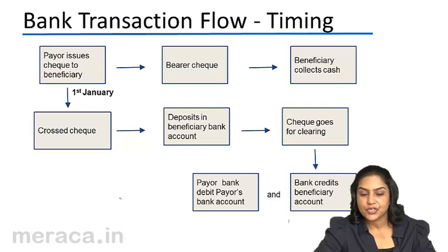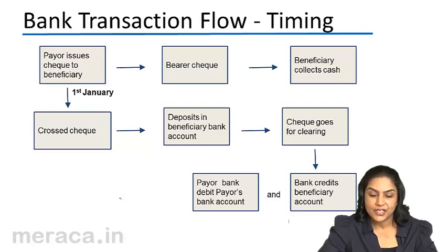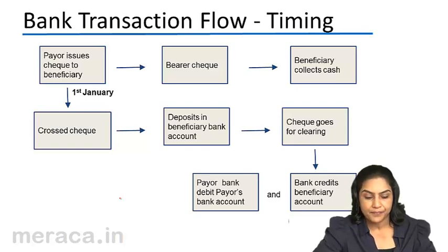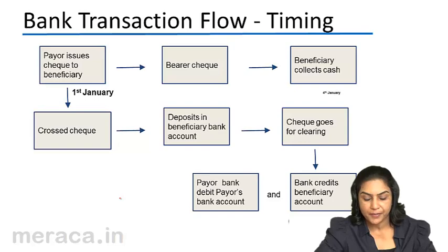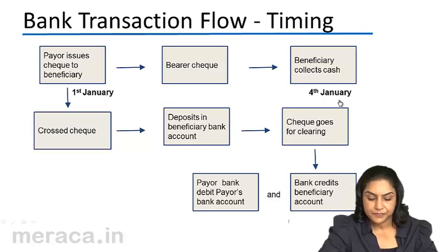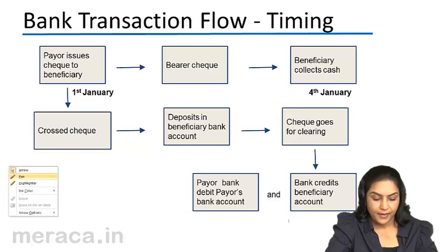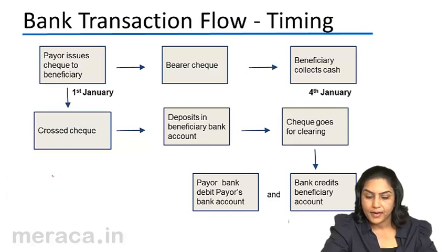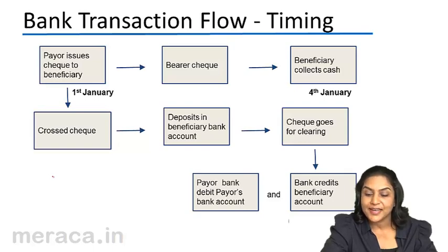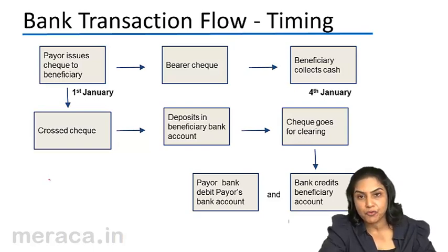The bank transaction flow — let us understand the timing. The payer issues the check to the beneficiary on 1st January. Let us first take the case of a bearer check. In case of a bearer check, let us assume the beneficiary has collected the cash only on 4th January.